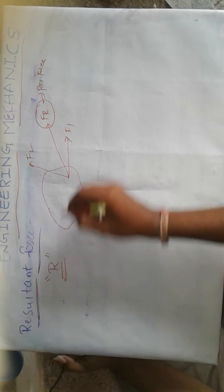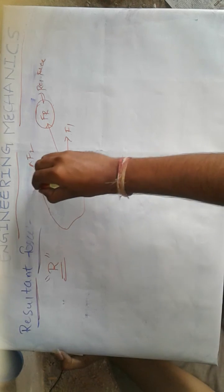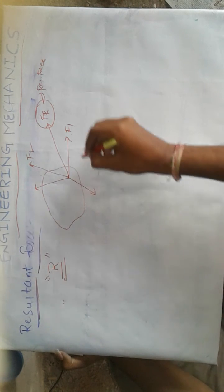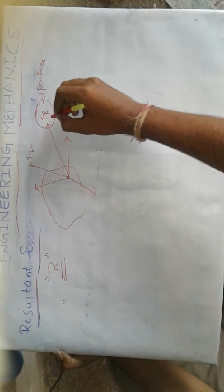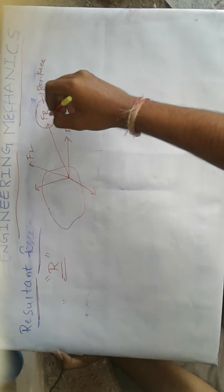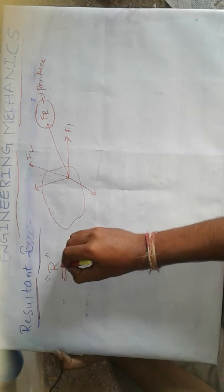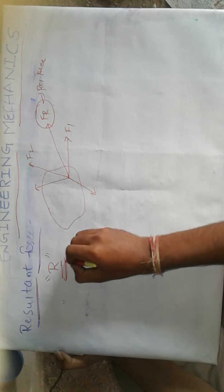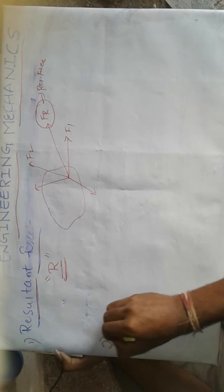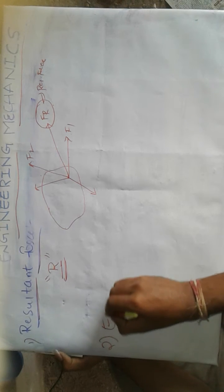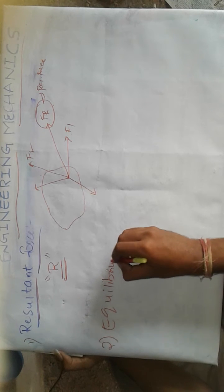The role of the resultant force: whatever the number of forces acting on the body, all are replaced by a single force, and all effects are produced by this single force. This single force is said to be the resultant force. And the second concept is equilibrium force.